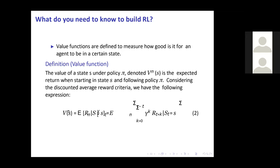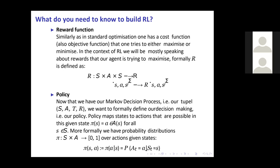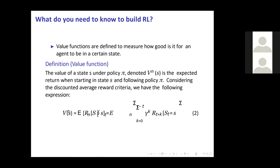After the policy function, the next thing we need is a value function — a formal mathematical object to give the expected return you would get when performing under policy P in state S. I apologize for the bad formatting; I converted this from a LaTeX presentation to PowerPoint. The formulas are perhaps less interesting than the mathematical idea behind them.